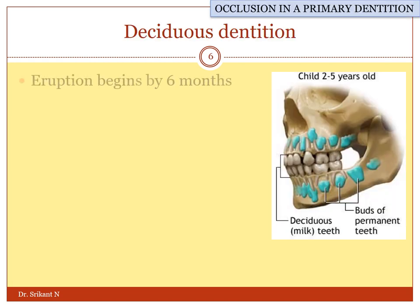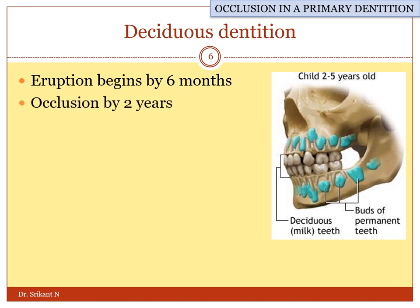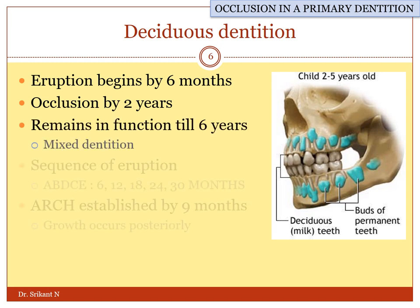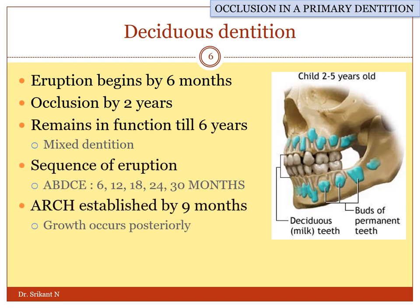When we look at deciduous dentition, eruption generally begins by six months and the sequence of eruption is generally A, B, D, C, and E. All the deciduous teeth are in occlusion by two years of age. The deciduous second molars come in contact with each other by two years. Posterior to the deciduous second molar, the tooth buds of the permanent teeth also start to develop.